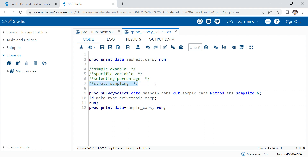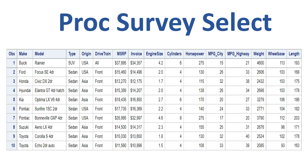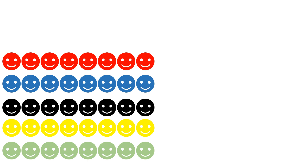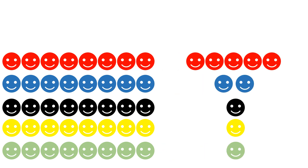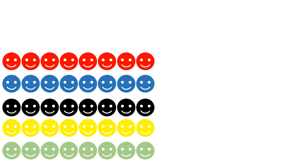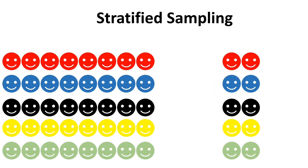Now let's discuss stratified sampling. Imagine you're doing random sampling with your eyes closed and you end up selecting mostly from one group — that could still be biased. To fix this, you provide a condition: for example, you must select two people from each group. If you need 10 samples across five groups, you take two from each. This method is called stratified sampling.